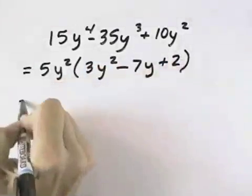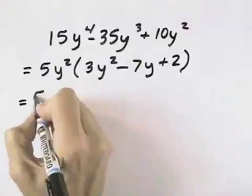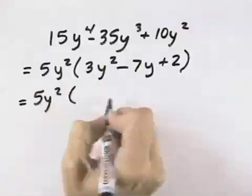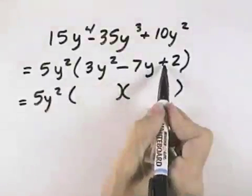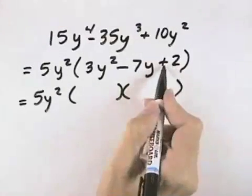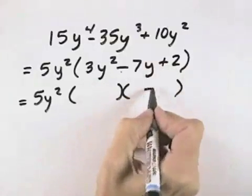Now what we want to do is look at this remaining trinomial and see if it can be factored. So we carry the 5y squared down. We try to break down our remaining trinomial. We can see the second sign is positive, which means both signs are the same, so they must both be negative, which is our first sign.